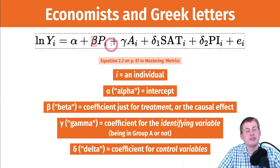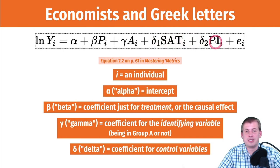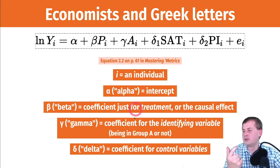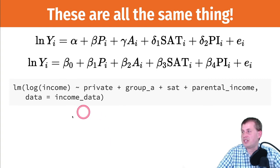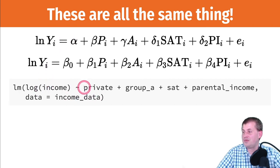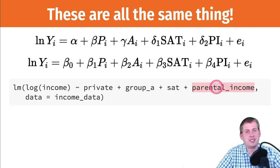In even more complex equations from Mastering Metrics, you still have beta as the main causal effect and gamma for treatment vs. control, but additional control variables like SAT scores or parental income use delta as the coefficient. So alpha is the intercept, beta is the causal effect, gamma is the identifying variable, and delta represents control variables. But technically these are all the same thing — just slopes in a regression.